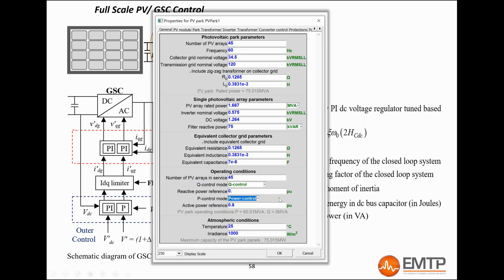These two options are available from the general tab of the PV device mask. It should be noted that, in the EMTP 4.1 version, whatever option is used, the DC bus voltage reference is calculated at the beginning of the simulation only.